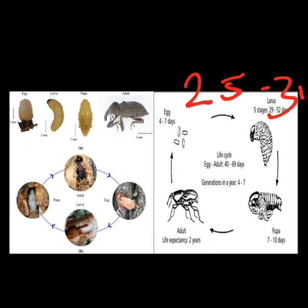After 25 to 30 days of the larva stage, the grub pupates within the rhizomes. The pupa stage lasts for about a week, then the pupa transforms into the adult and comes out. This completes the life cycle.